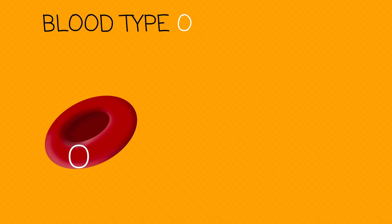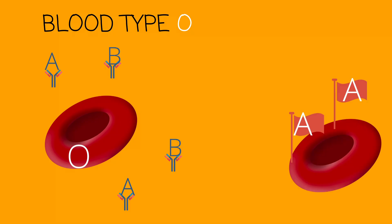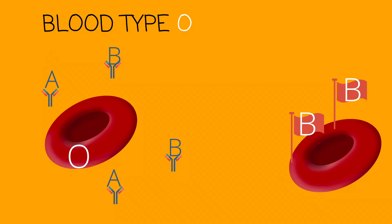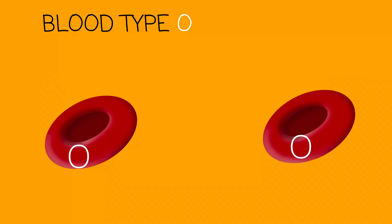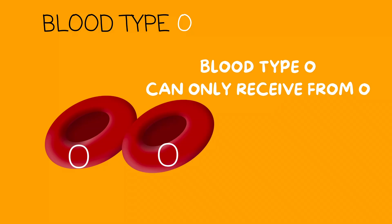Lastly, we have blood type O. Blood type O has both A and B antibodies, so anything flagged with an A or a B will be rejected — blood type O will fight it. If an A comes along, it will be rejected. If a B comes along, it will be rejected. If an AB comes along, it will be rejected. But if an O comes along, it will be accepted. Blood type O will only receive from blood type O.